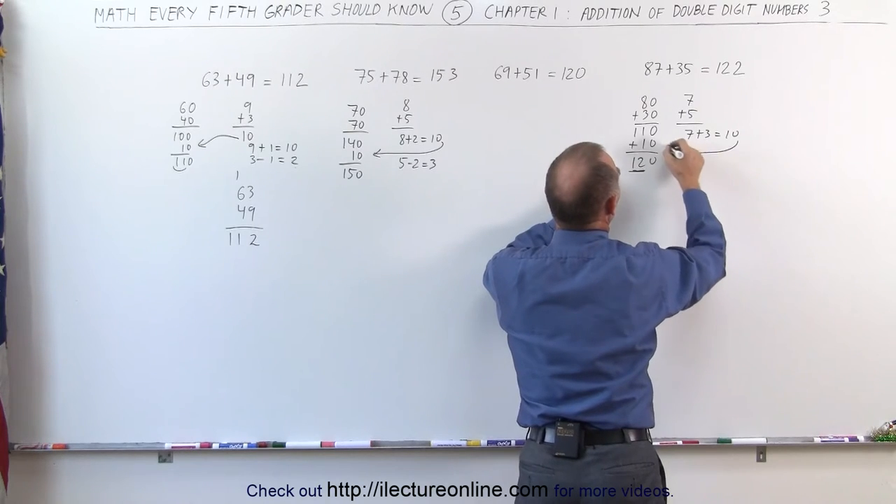Again, to see how we did that quickly in our head, that's what we should have thought about. We said, 80 plus 30 gives me 110. But since seven plus five is more than 10, I have to add another 10 to that, gives me 120. I write the first two numbers down. And seven plus five, that is seven plus three, that's equal to 10. That went over here. And I'm left if I take the three away from five. Five minus three, that's equal to two. And that two goes over here. And that's how we quickly do that in our head.